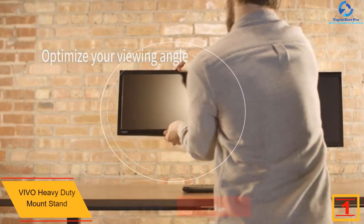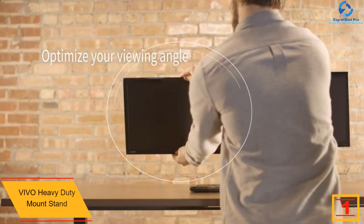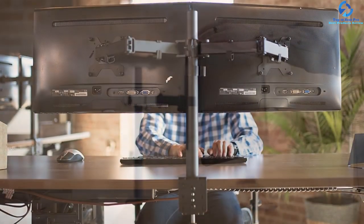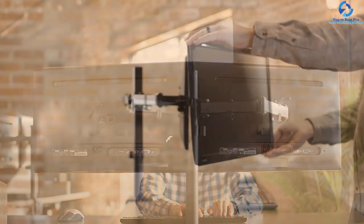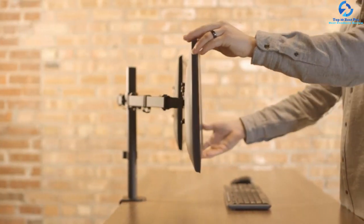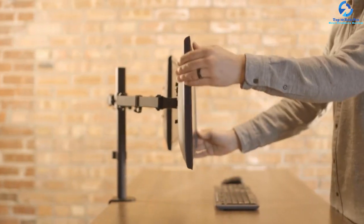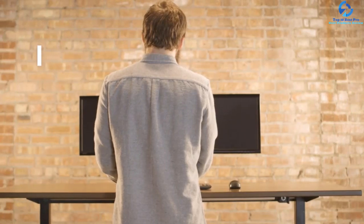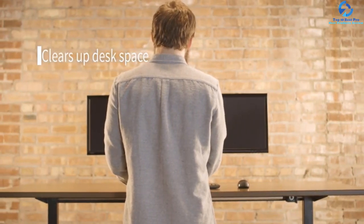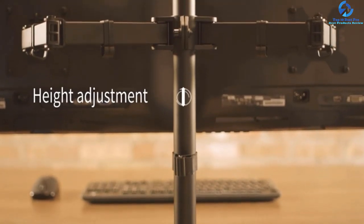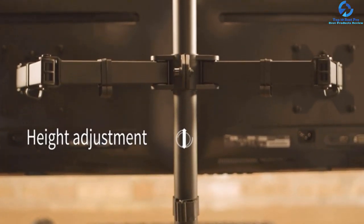This stand comes with height adjustment and full motion circulation which gives you the freedom to position it the way you want. There is an incorporated cable management system on this stand to ensure your desk remains tidy at all times. The materials used to make this stand are sturdy which ensures it is strong but light. On the stand there are strong clamps which hold the monitors in position without unnecessary movements.